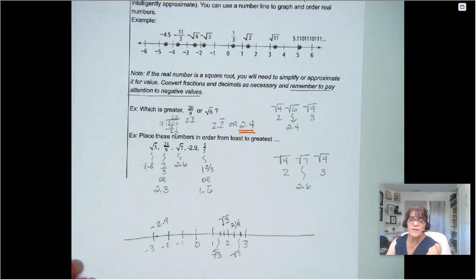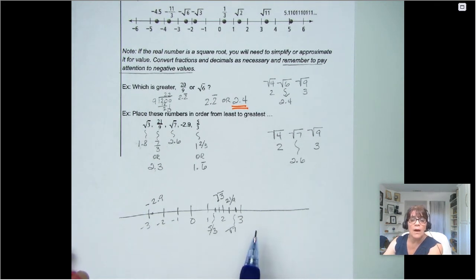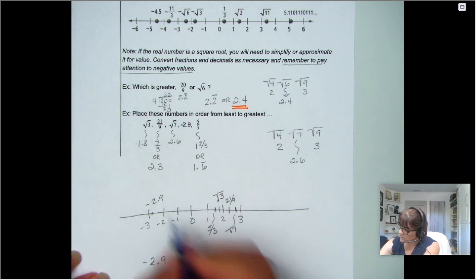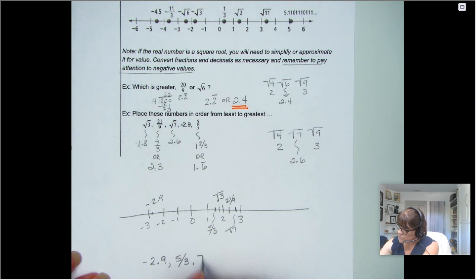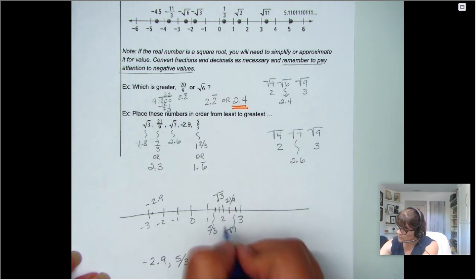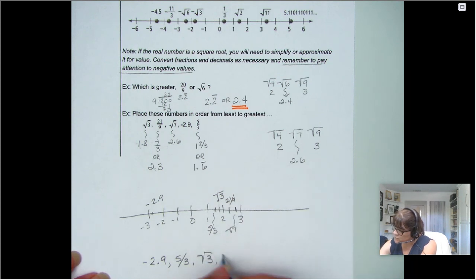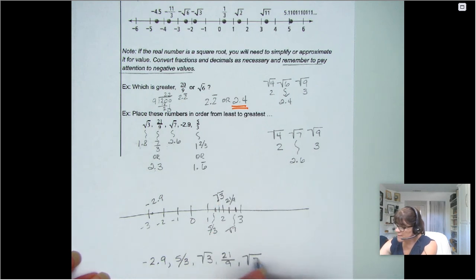Now if I look at what is essentially really messy scratch paper, I have the order, so I can write them down. Negative 2.9, then 5 thirds, then the square root of 3, then 21 ninths, then the square root of 7.